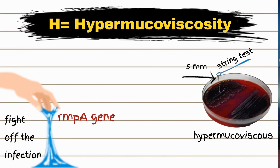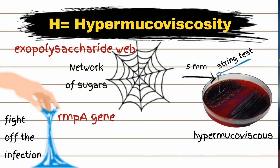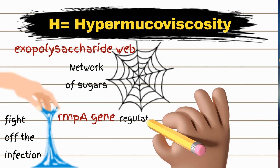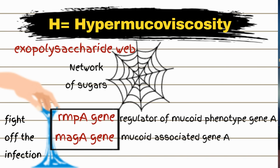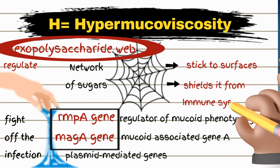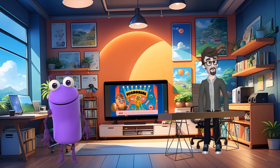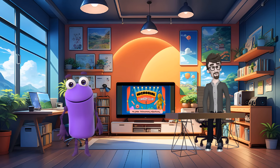But Dr. Max, how does this sticky slime form? Great question, Sella. The sticky slime, or hypermucoviscosity, is due to the exopolysaccharide web — a network of sugars produced by Klebsiella. It's like a gooey blanket that covers the bacteria, making it harder for immune cells to attack and destroy them. The genes RMPA (regulator of mucoid phenotype gene A), RMPA2, and MAG-A (mucoid-associated gene A) are key players here. They are plasmid-mediated genes that regulate the formation of this web. This gooey web not only helps Klebsiella stick to surfaces but also shields it from our immune system, making infections harder to treat. Hypervirulent strains with these genes are particularly dangerous and often cause severe infections, as they enhance the production of the exopolysaccharide web.